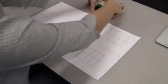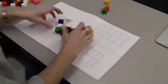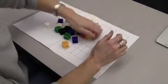Okay, today we're going to talk about how to use connecting blocks to model regrouping with two-digit numbers.